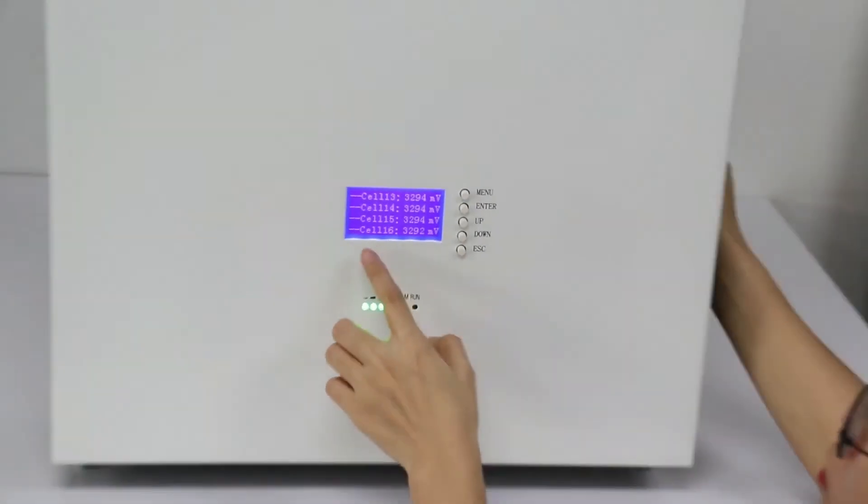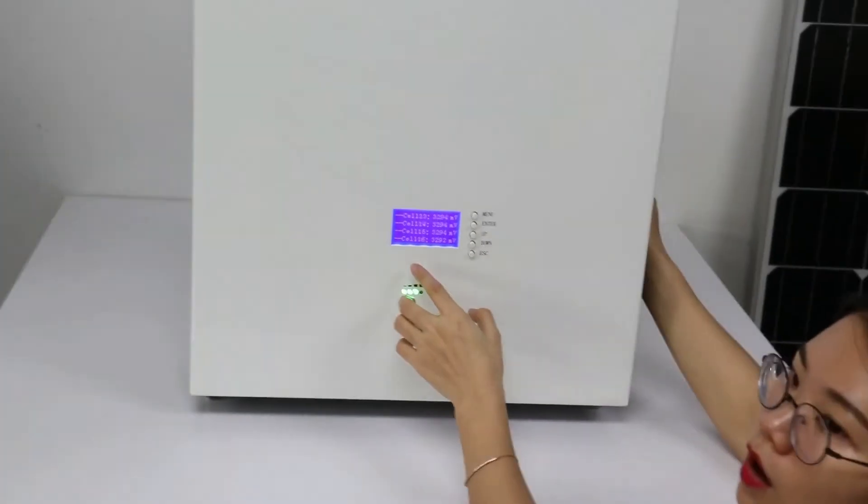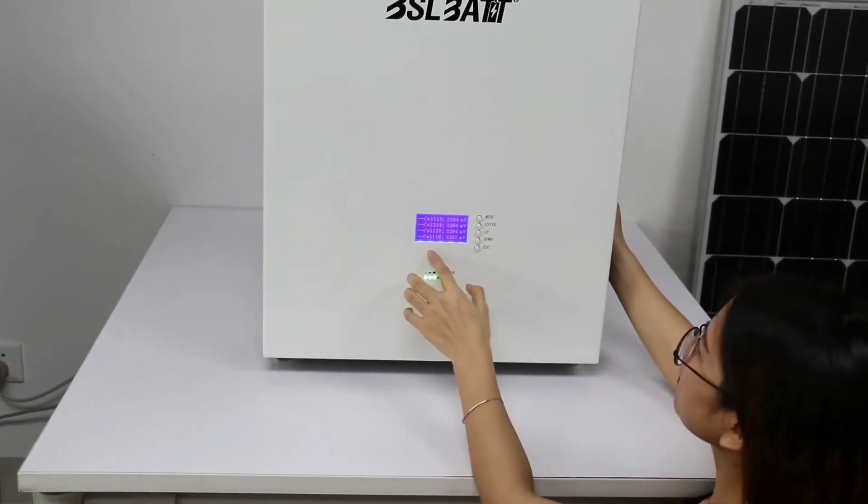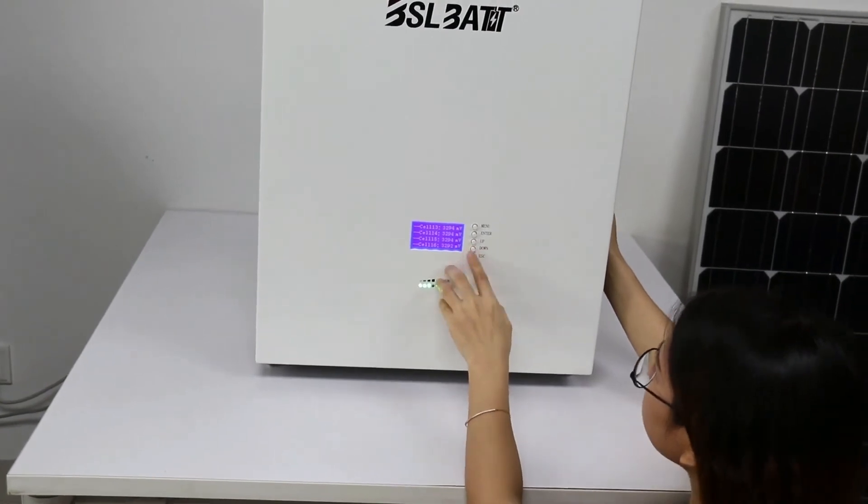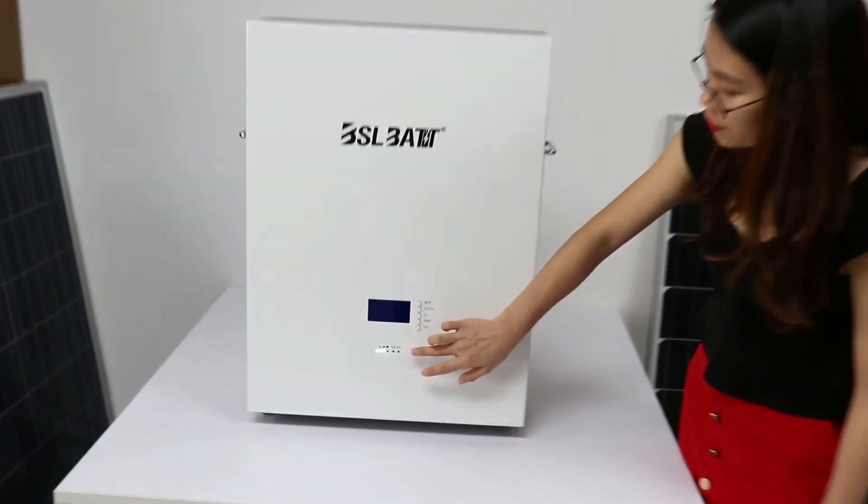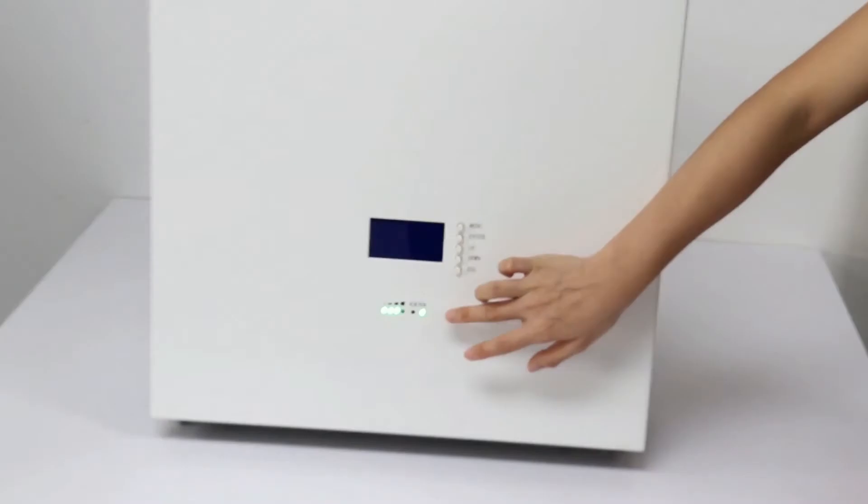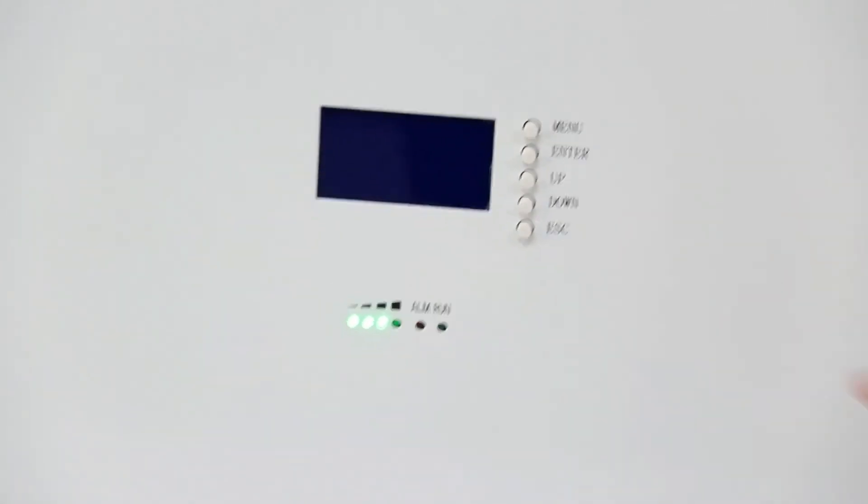For the 48V, we have 16 cells in this pack. This is the LED line, so it's easy to see the battery power.